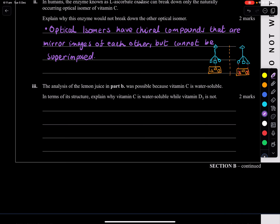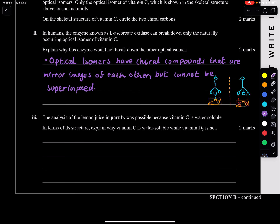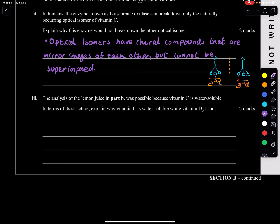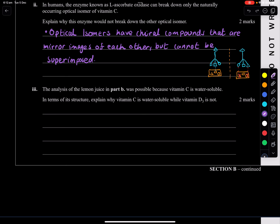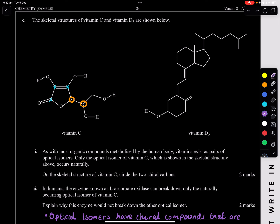Final question: explain why vitamin C is water soluble while vitamin D is not. Looking at their structures: vitamin C contains oxygen atoms (hydroxyl groups), and when you see oxygen, nitrogen, or fluorine in a molecule, it creates polarity through hydrogen bonding — making it water soluble. Vitamin D has a largely hydrocarbon structure with few polar groups, making it non-polar and therefore not water soluble.